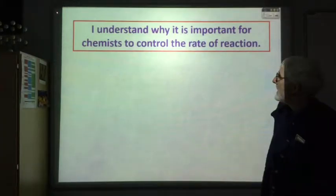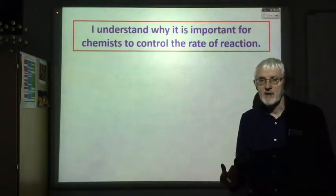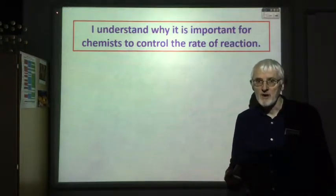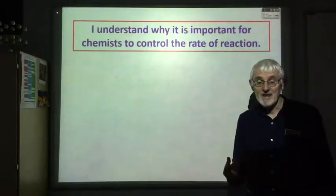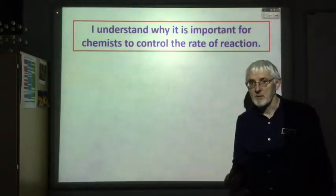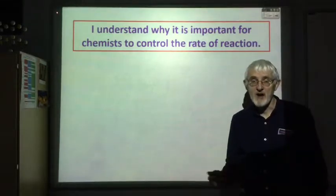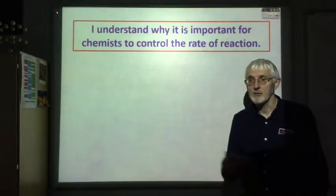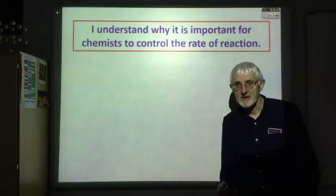The first learning outcome is to understand why it is important for chemists to control the rate of reaction. If you're an industrial chemist trying to make some product and the reaction is very slow, it's not very economical for the factory, so we normally want to speed up that reaction. On the other hand, if the reaction is very fast there's a possibility of an explosion, so you'd want to slow it down. Or the reaction could be unwanted, for example a car rusting, and we do all we can to slow down that rate.